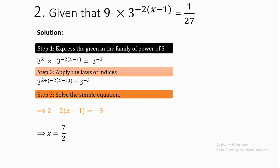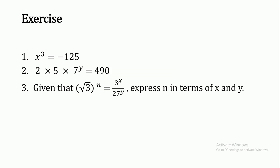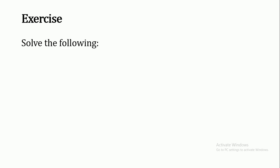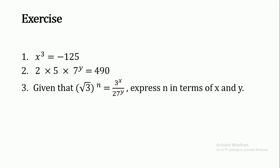The exercises for you are: 1) x^3 = -125, 2) 2 × 5 × 7^y = 490, 3) Given (√3)^n = 3^x/2^y, express n in terms of x and y. Please work on these exercises and drop your answers in the comments. Thanks for watching, please like, share, and subscribe.